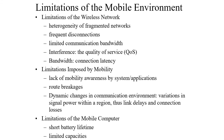Another limitation of the mobile environment is limitations of wireless networks: fragmented networks, frequent disconnections — where voice from the other side may not be clear, distortions may occur, or calls may be cut during conversation. These are limitations of wireless networks. There is also a lack of mobility awareness, breakages in the network as you move from place to place, dynamic changes in the communication environment, short battery life, and limited bit-rate capacity.